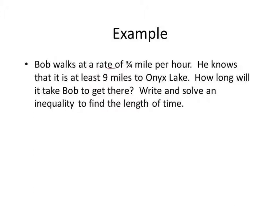If you're looking at a rate, a distance, and a time, that should make you think of D equals RT. The only thing now is that this is going to be an inequality because it's at least 9 miles. If we flip this around to RT equals D, RT has to be greater than or equal to the distance, since it says at least 9 miles.